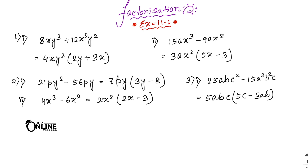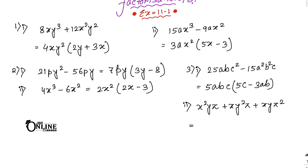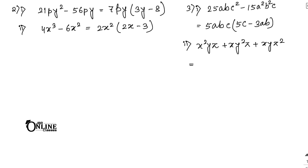Sum number 3.2: x²yz + xy²z + xyz². Find the common terms across all three terms. x, y, and z are each common. Taking one of each, the common factor is xyz. The answer is xyz(x + y + z).